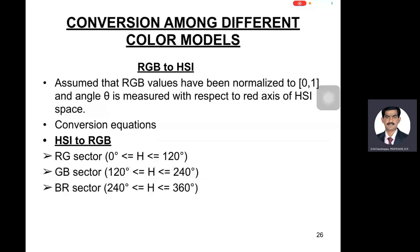The conversion equations: RG sectors, GB sectors, and BR sectors. In RG sectors, theta zero less than or equal to H less than or equal to 120 degrees. In GB sectors it starts from 120 to 240, and in the BR sectors 240 to 360, full circle. RG sectors will be considered from 0 to 120 degrees.